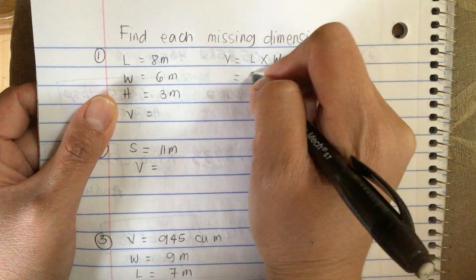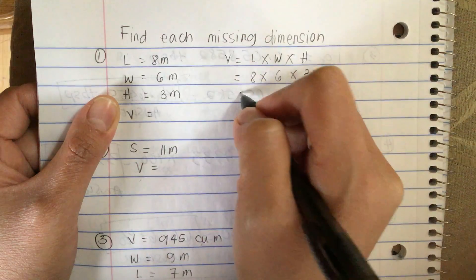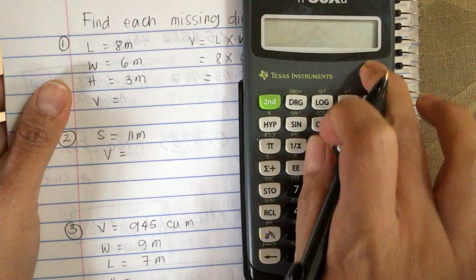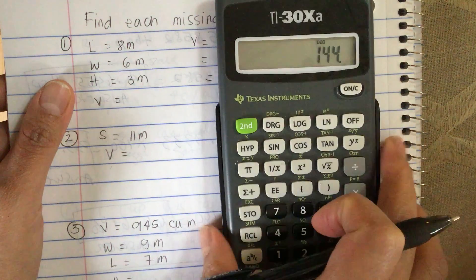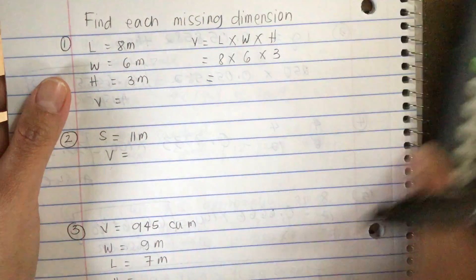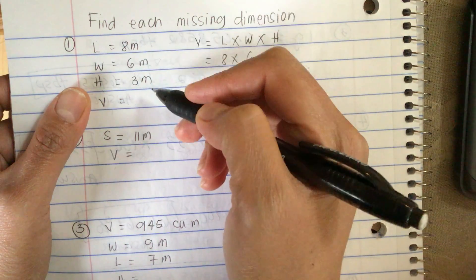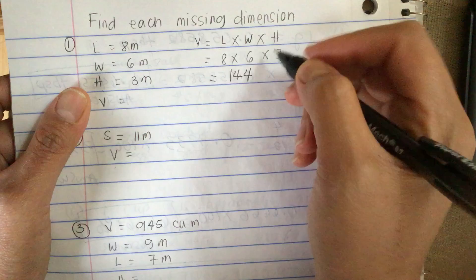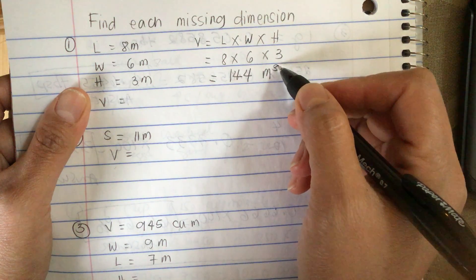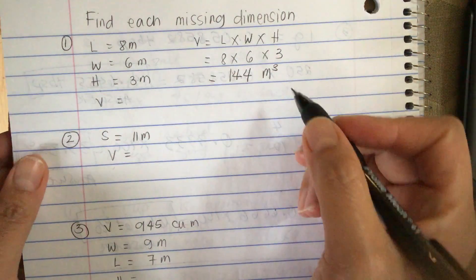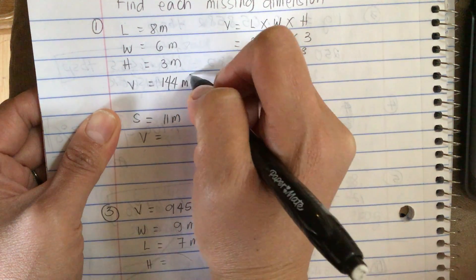So volume is equal to 8 times 6 times 3, which equals 144. The unit is cubic meters — there are three dimensions, so we write m with a small 3 on top. This gives us 144 cubic meters.